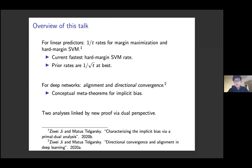We will discuss both linear predictors and deep networks. For linear predictors, we will prove minority rates for margin maximization and hard margin SVM — we can prove that the simple algorithm gradient descent can already achieve the current fastest hard margin SVM rate, while all prior rates are 1/√t at best. For deep networks, we will prove two general implicit bias results called alignment and directional convergence, which generalize and strengthen many prior results and can also imply new implicit bias results.